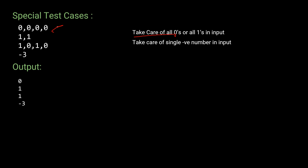Special case one: what if all inputs are zeros or ones? We must handle the output accordingly. Special case two: what if only a single negative number is given as input, like -3? Then we must return -3, because we have to include at least one panel. That's why we output the negative number itself in this case.